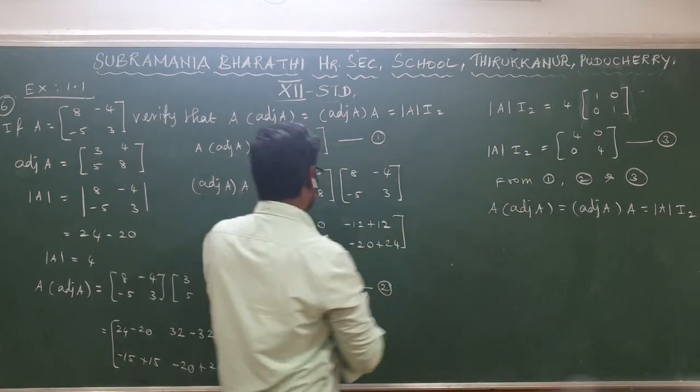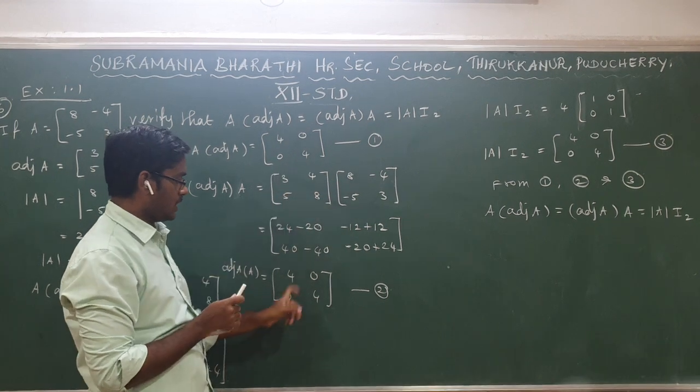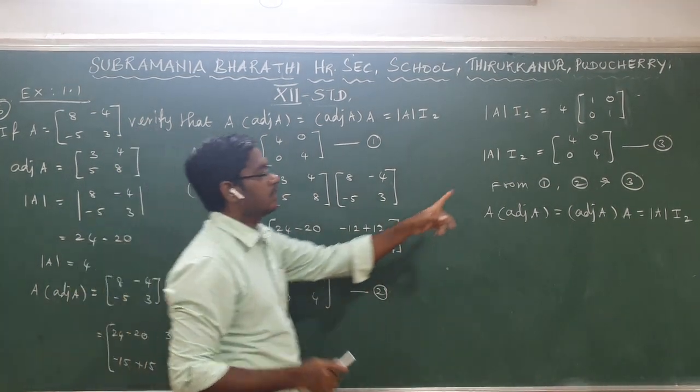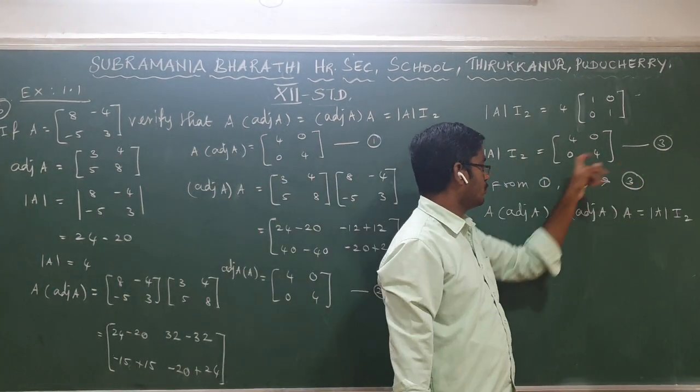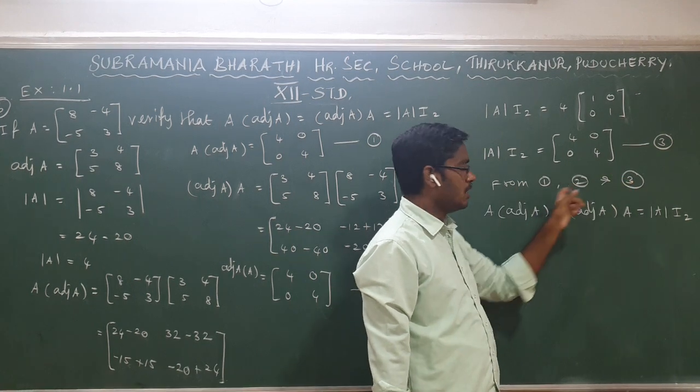So the first equation is [4, 0; 0, 4]. Second equation is [4, 0; 0, 4]. Then third equation is [4, 0; 0, 4]. All three equations are equal, as we needed to show.